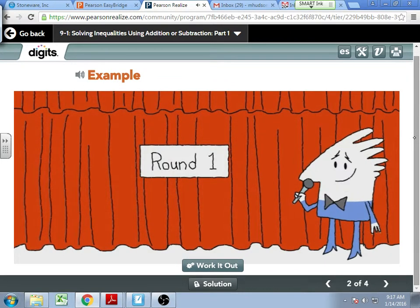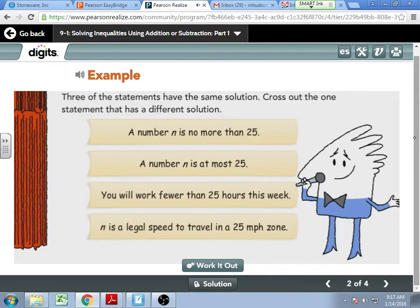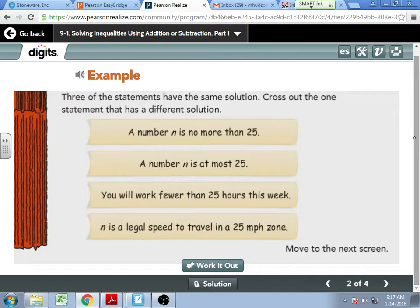Welcome to One of These Things is Not Like the Others. Let's play. Three of the statements have the same solution. Cross out the one statement that has a different solution. Number N, now this is weird, is no more than $25. What would it mean if something is no more than? If you have no more than $10, you have no more than. No more than. Still the same hands up I've already had. Crystal, do you think you might know?